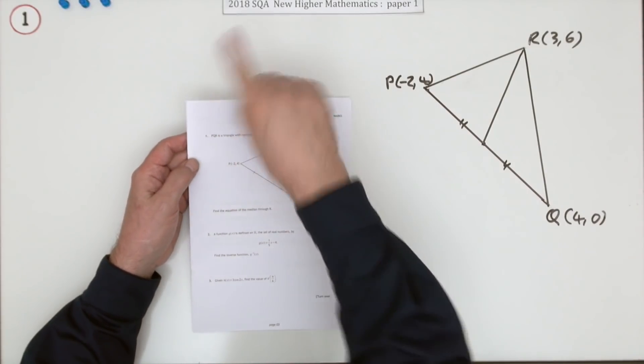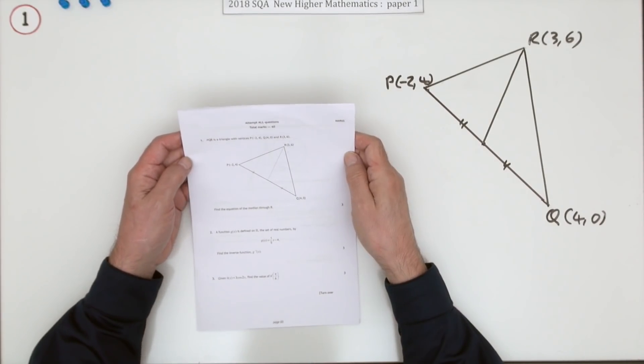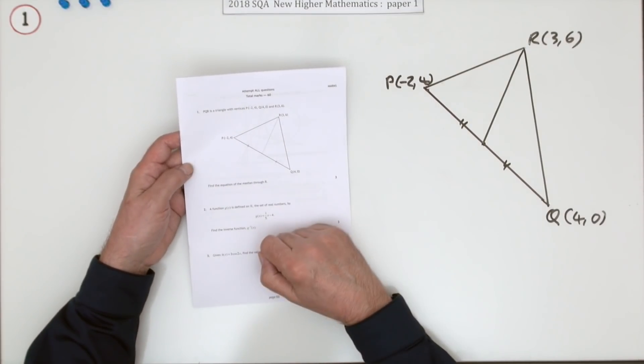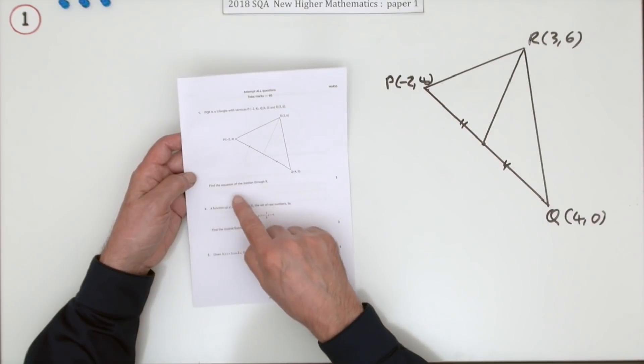Number one then, the first question in the 2018 SQA Higher Maths paper one, three marks, lines in a triangle, specifically just one line here.